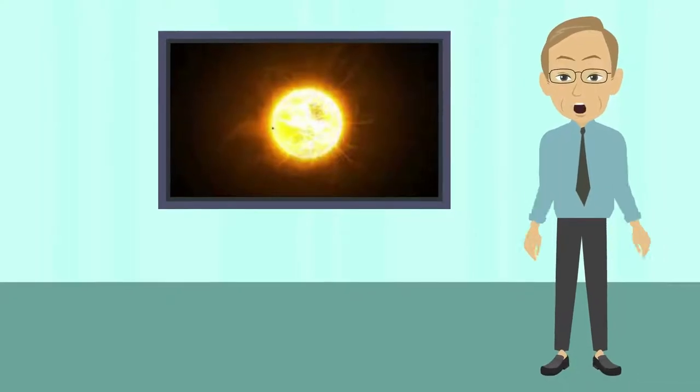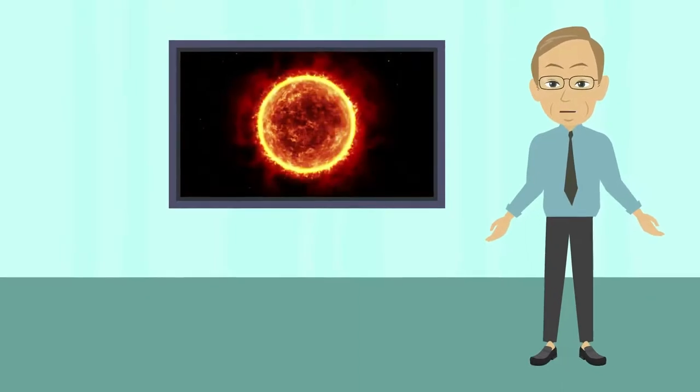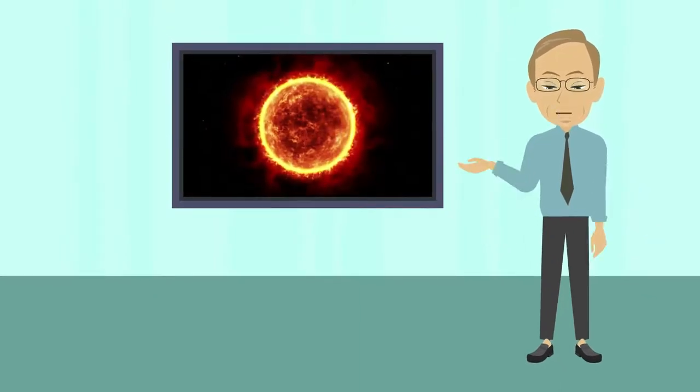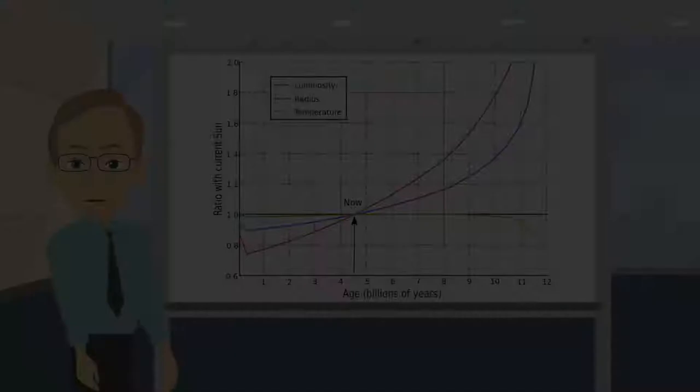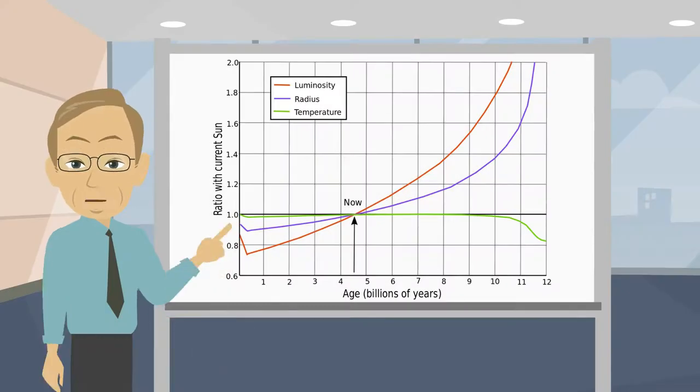The whole process of transforming into a red giant will occur over 5 million years, a mere flash in the Sun's lifespan. Right now, the Sun's luminosity is increasing by about 10% every billion years.